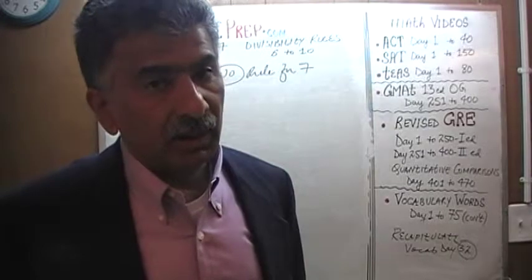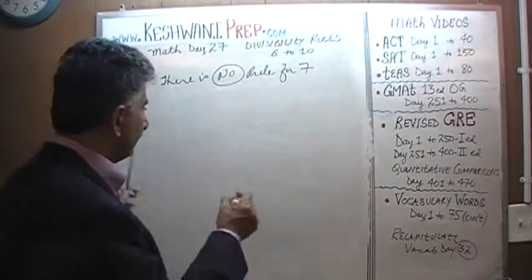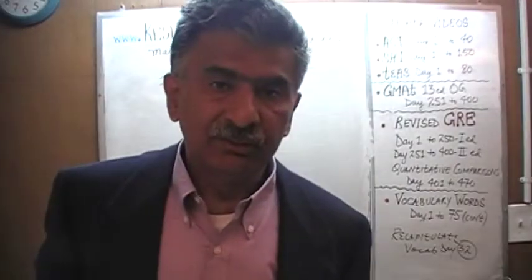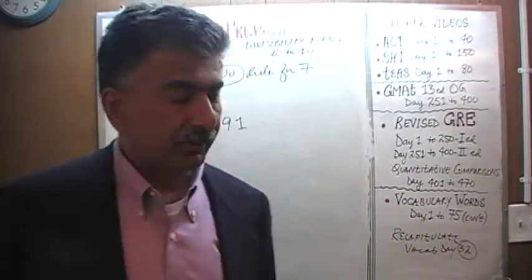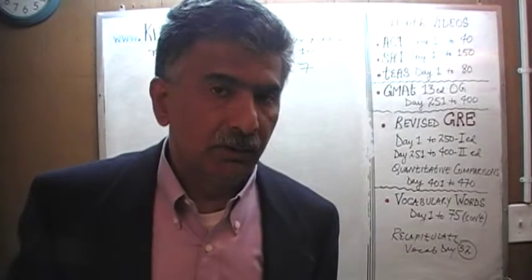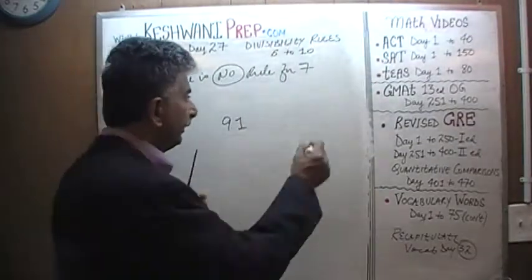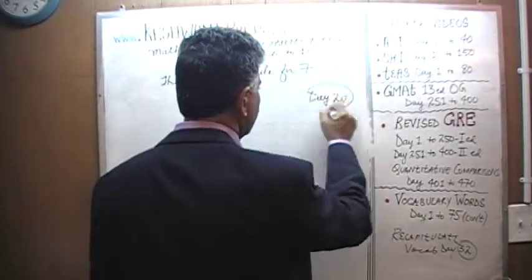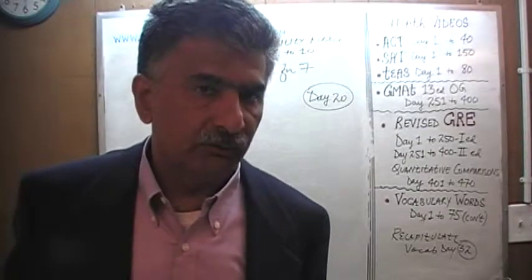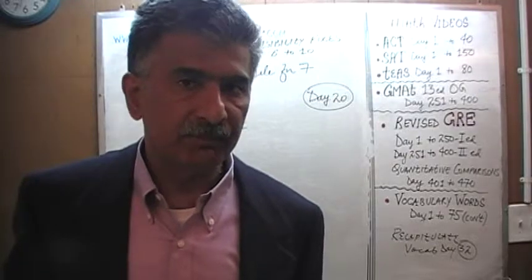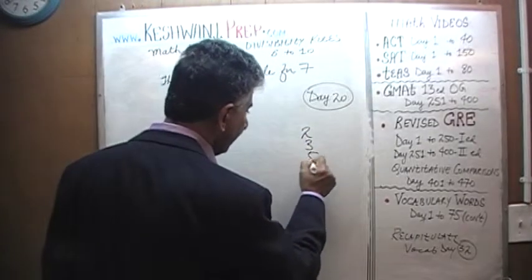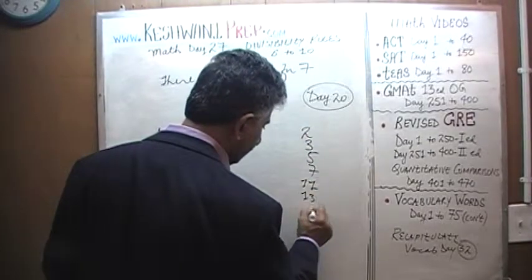For example, one number people often miss when looking for prime numbers is 91. Many times people think that 91 is actually a prime number — it's not. When you have a number and you're trying to figure out whether it's prime, as we learned on day number 20, the way we figure it out is to start dividing the number by all previous prime numbers — 2, 3, 5, 7, 11, 13, and so on. Obviously 91 is not divisible by 2 because it's an odd number.